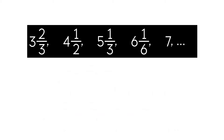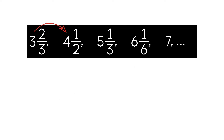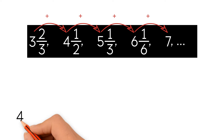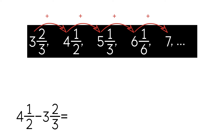Now let's take a look at the sequence of mixed numbers. We see that the sequence is increasing because the numbers get larger. Now let's try to find the rule. We take two consecutive numbers: 4 and 1 half, and 3 and 2 thirds. Let's try to subtract them. As you can see, we can't subtract because the denominators are not the same — we need to find the least common denominator.